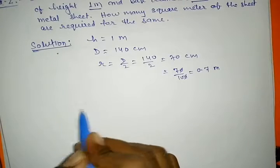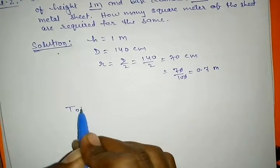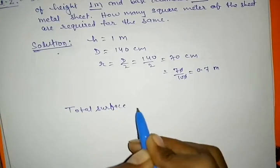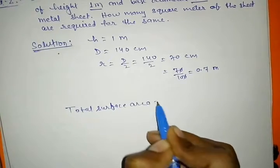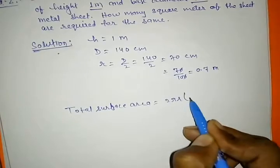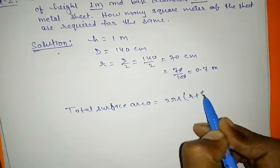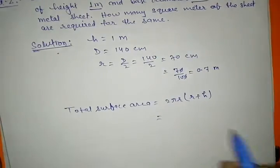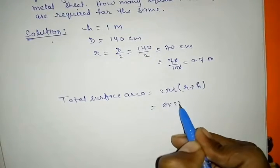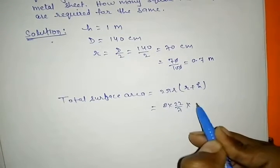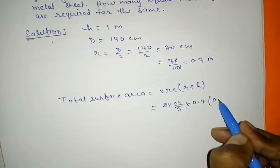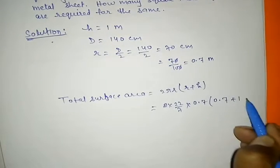How to find the total surface area? Total surface area equal to 2πr(r + h). यह होता है formula। अब इसमें value put करते हैं: 2 into 22 upon 7, R का value है 0.7, same value यहां भी put करेंगे 0.7, और plus 1।